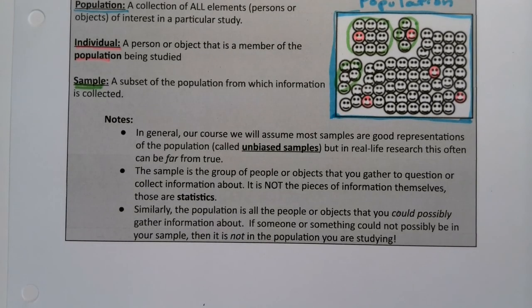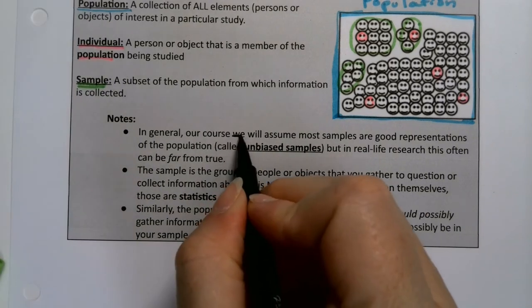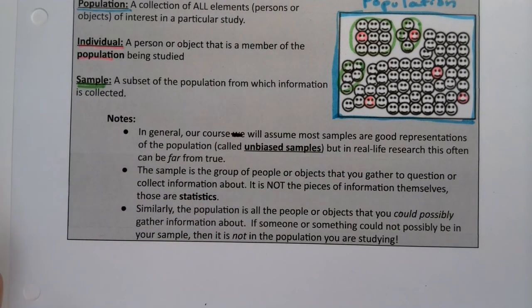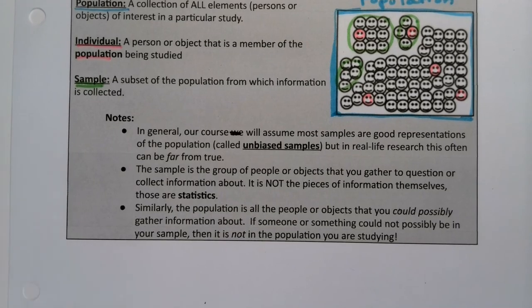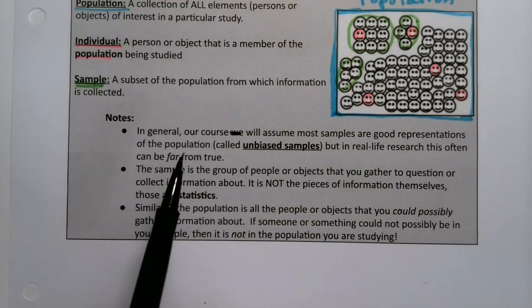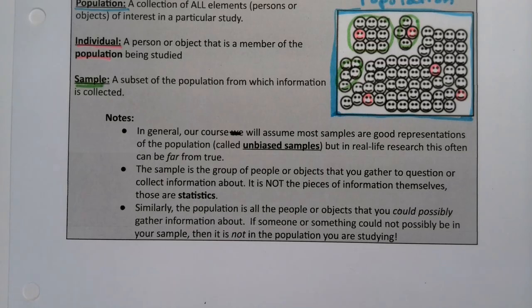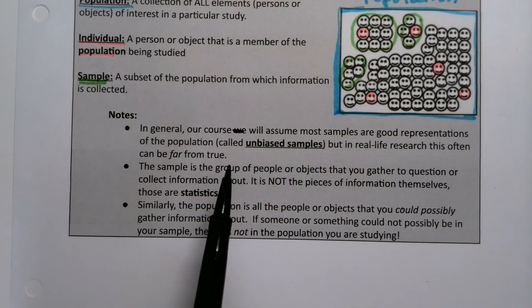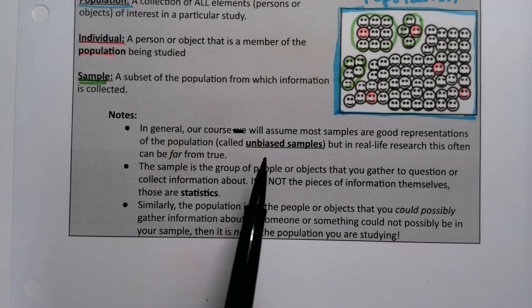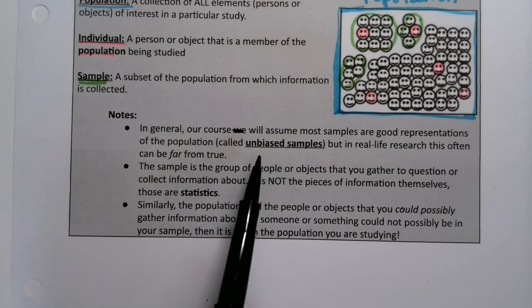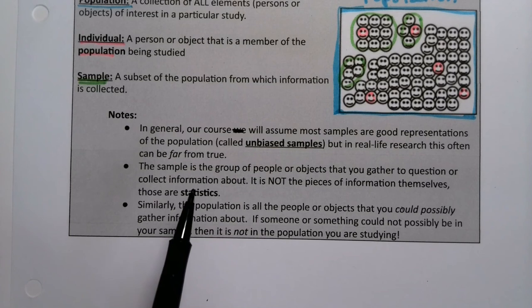Our course will assume most samples are good representations of the population. In other words, they're unbiased samples. In real life research, that's far from true. It depends on funding, whether people have an axe to grind, what you're doing. But we will pretend that all samples are beautiful and perfect and unbiased, because we don't really have a lot of options if they are biased.